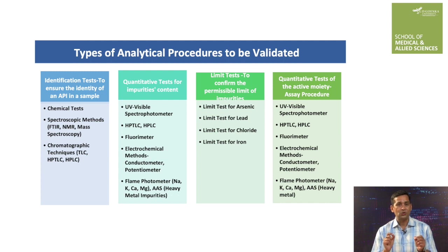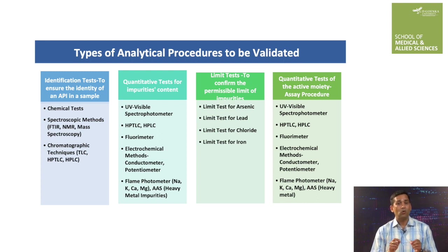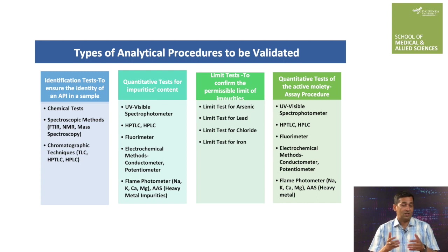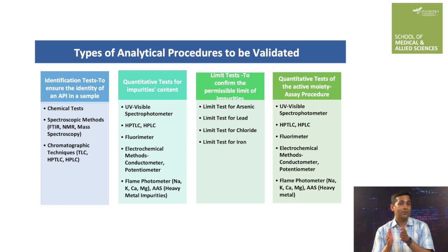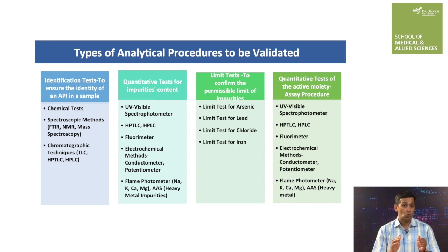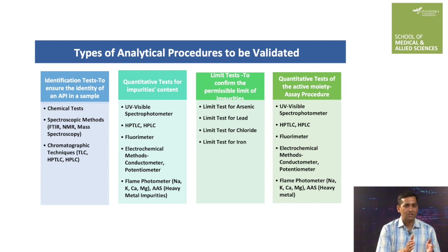Some chemists use chromatographic techniques for the same purpose. These chromatographic techniques include TLC, HPLC, HPTLC, etc. The next category is quantitative test for impurities. The analytical techniques which can be used to quantify impurities are UV-visible spectrophotometer, HPTLC, HPLC, and fluorimeter.